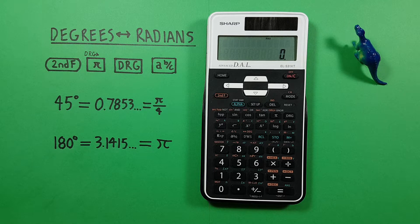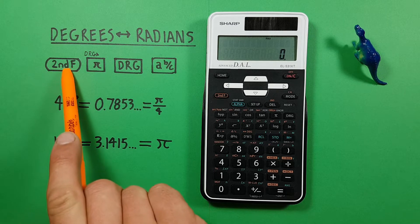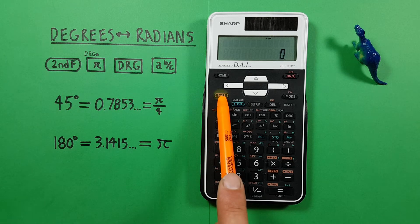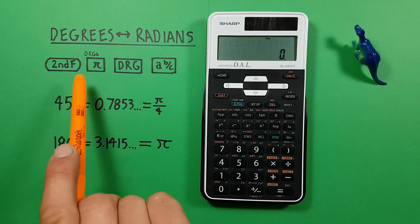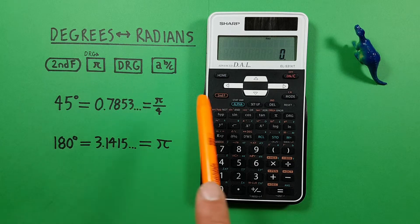To do that we need to use the second function key that looks like this located here. The pi key with the second function of degrees radians gradians conversion or angle conversion that looks like this located here.